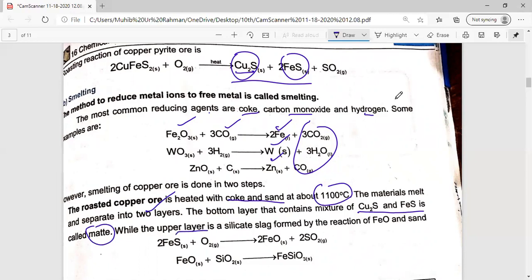In the upper layer, there is silicate slag. What is silicate slag? There was iron sulfide here and copper sulfide also. There was coke and sand. So iron sulfide, almost 50% iron sulfide, which is oxygen, react to iron oxide and sulfur dioxide. This iron oxide and silicon dioxide react to silicate slag.